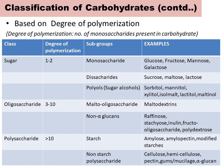The second group is oligosaccharide, which includes malto-oligosaccharide and non-alpha-glucan oligosaccharide. Here we can see three to ten monosaccharides are linked together.